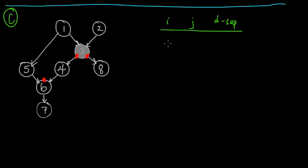Let's look at some interesting pairs. Are 2 and 5 d-separated given 3? To check d-separation, we need to see if every path is blocked. Path 2, 3, 4, 6, 5 is blocked — it goes through two stop signs. But there's another path: 2, 3, 1, 5. Is that blocked? No, it's not blocked. So 2 and 5 are not d-separated.